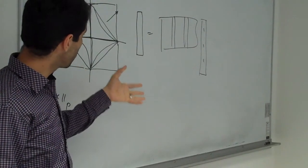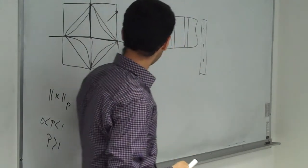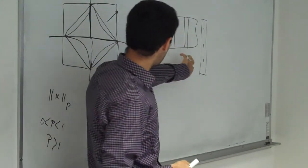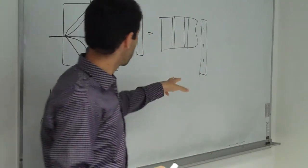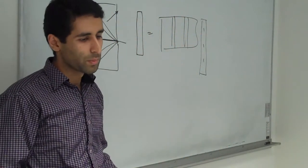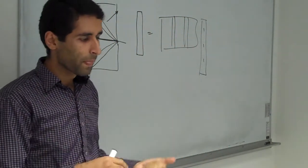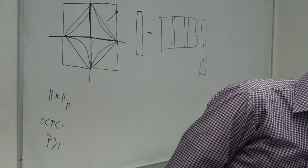The objective in compressive sensing is finding x. We have y as observation and phi as a matrix that we have, and we try to find x based on some techniques. For example, we like to have a minimum L1 of x.